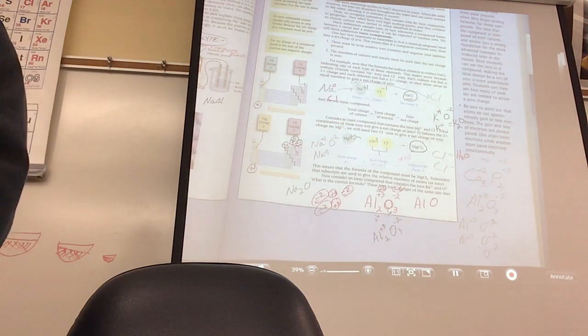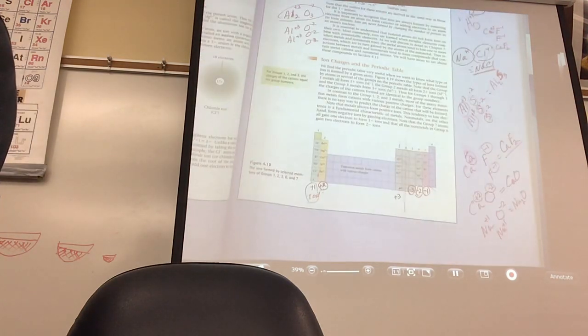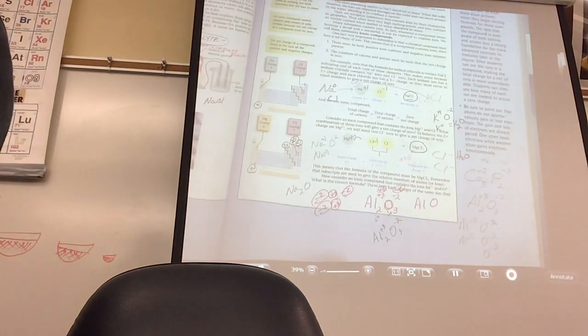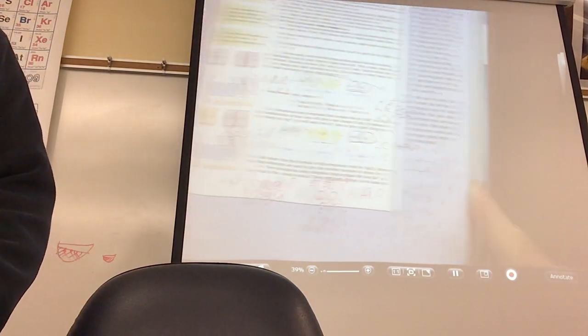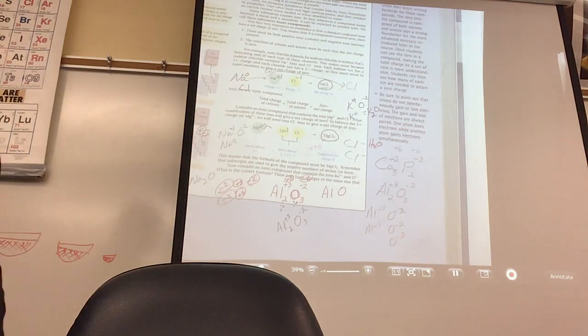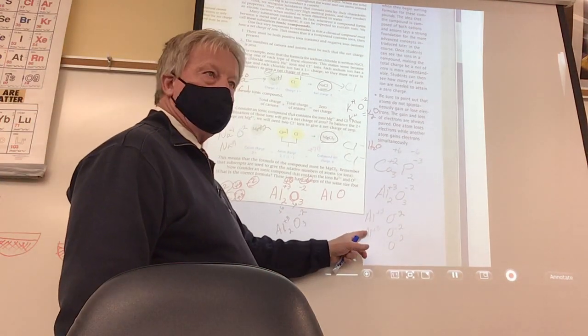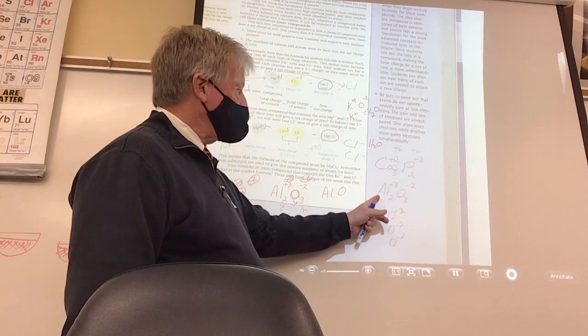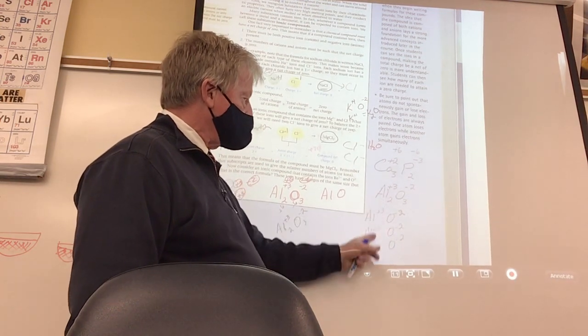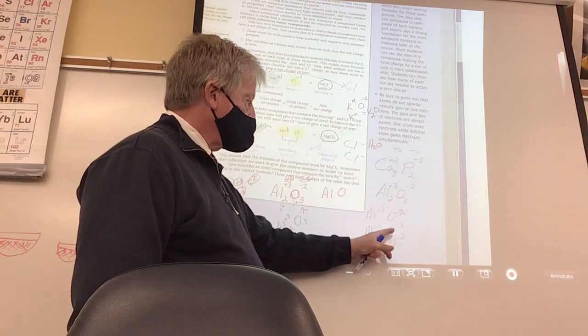If you were to draw it, you can see a little drawing right there. If you gave me two of those that'd be +6, and you give me three of those that'd be -6. That's why aluminum oxide is Al2O3.